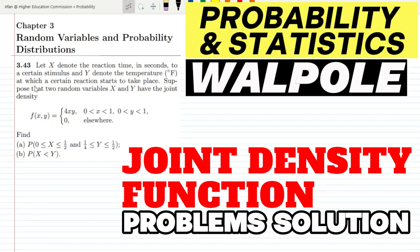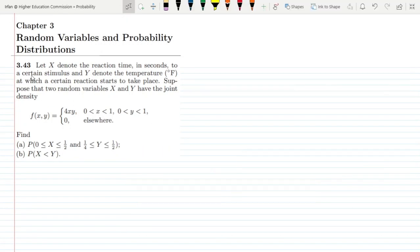Hello guys, I hope all of you will be fine. This is question 3.43. It says: let x denote the reaction time in seconds to a certain stimulus and y denote the temperature in Fahrenheit at which a certain reaction starts to take place. Two random variables x and y have the joint density function f(x,y) = 4xy for x ranging from 0 to 1 and y ranging from 0 to 1, and 0 elsewhere. We have two parts to find.